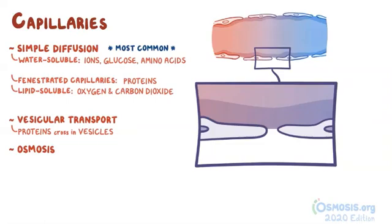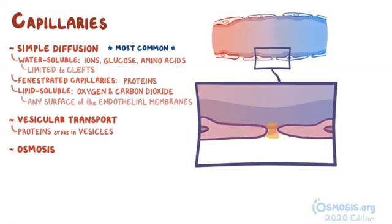Additionally, the rate of diffusion of water-soluble substances and lipid-soluble gases are not the same. It all comes down to the total surface area available for them to cross. So, water-soluble molecules, like glucose, are limited to the clefts, while something like oxygen can diffuse across any surface of the endothelial membranes. This is why oxygen can diffuse into tissues faster than glucose.